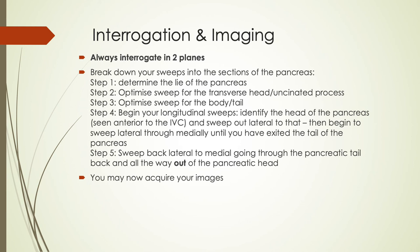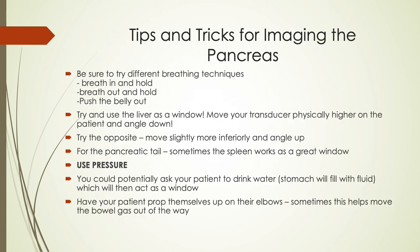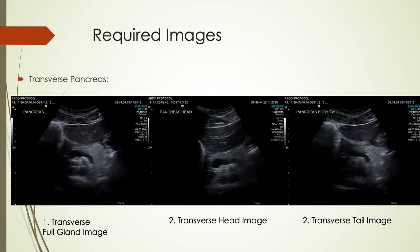Remember all of those small techniques that can help you see the organ: try different breathing techniques, try angling superior or inferior, have the patient fill their stomach with fluid, or come back to it at the end of the exam. If you've done all of these things and still can't see the pancreas, it comes down to documentation. The required images for the pancreas are three in transverse: one of the full gland, one optimized for the pancreatic head, and one optimized for the pancreatic body and tail. I personally also take longitudinal images of the head and tail. The end goal is that we find the pathology and answer the clinical question.